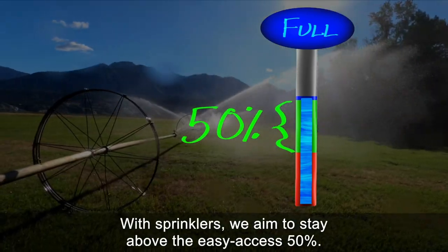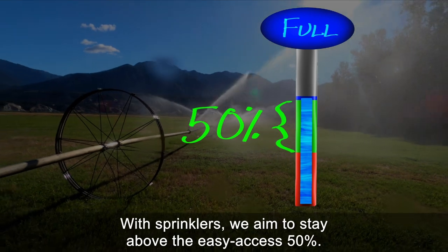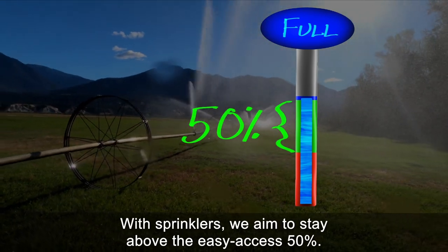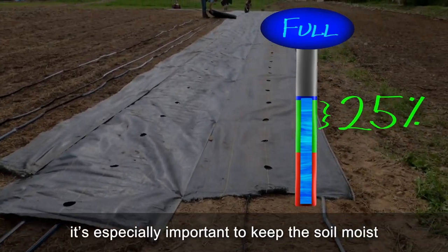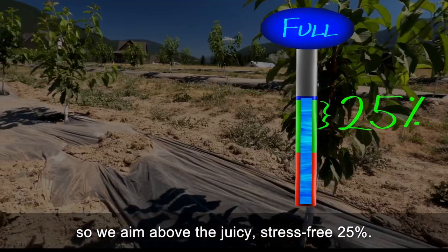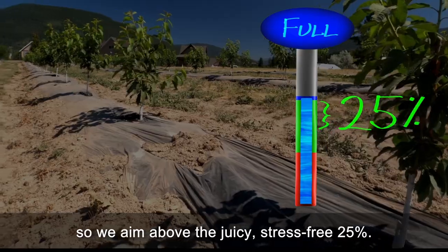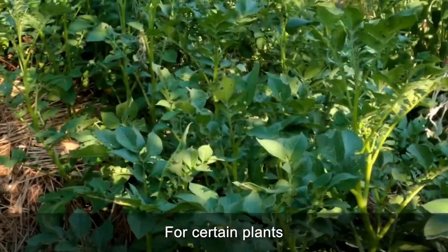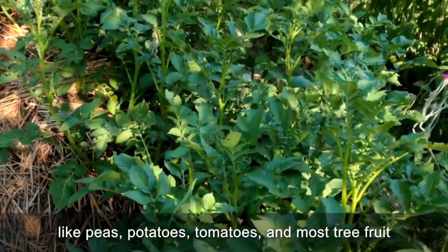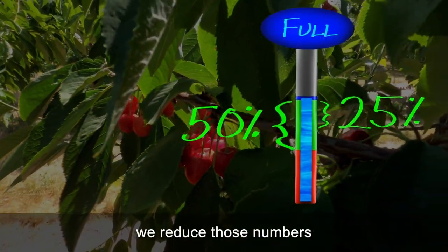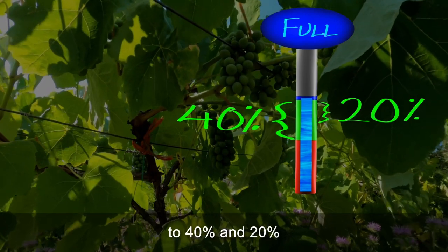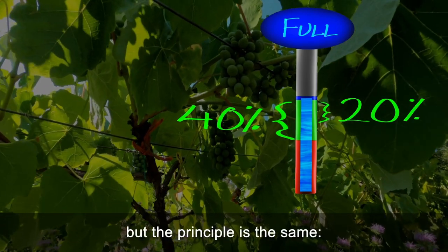With sprinklers, we aim to stay above the easy-access 50%. With drip irrigation, it's especially important to keep the soil moist, so we aim above the juicy, stress-free 25%. For certain plants, like peas, potatoes, tomatoes, and most tree fruit, we reduce those numbers to 40% and 20%, but the principle is the same.